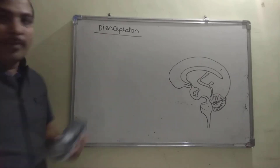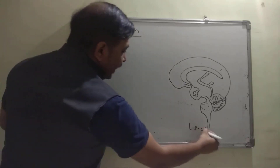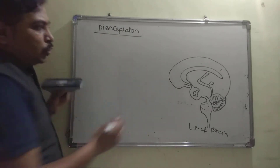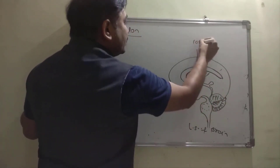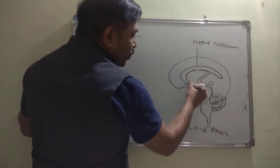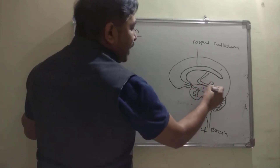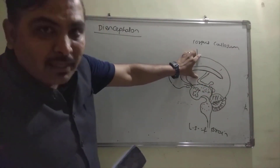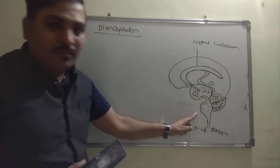The next part of the forebrain is the diencephalon. Looking at the longitudinal section of the brain, the corpus callosum is visible on top, and the midbrain is below. The upper portion is the forebrain, the middle is the midbrain, and the lower portion is the hindbrain.